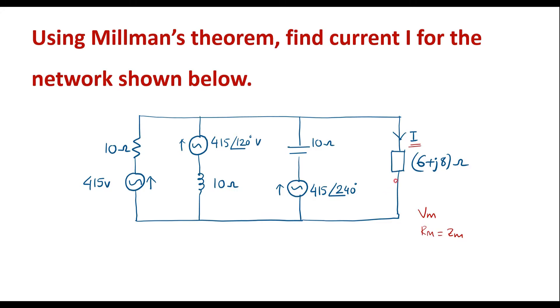The first step in Millman's theorem is we have to remove this 6 plus J8 branch from the circuit.